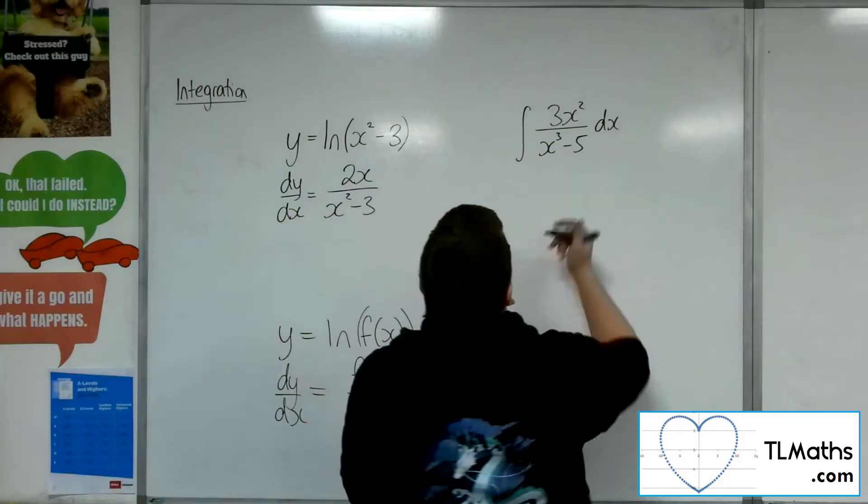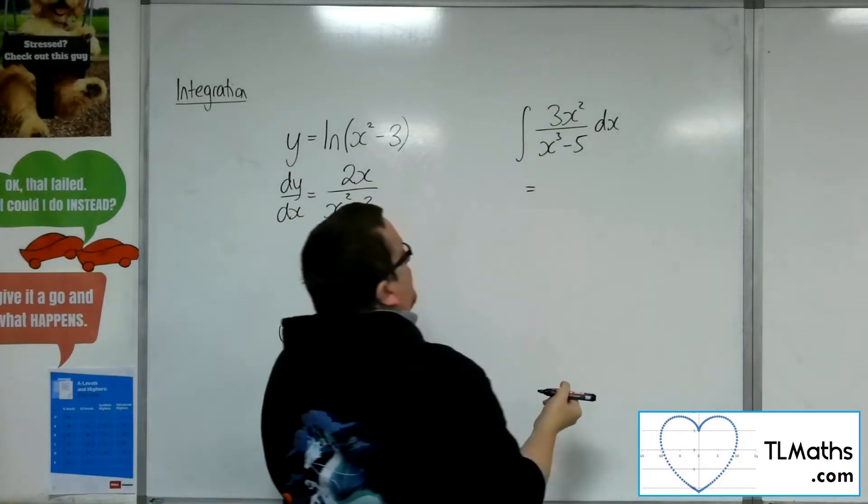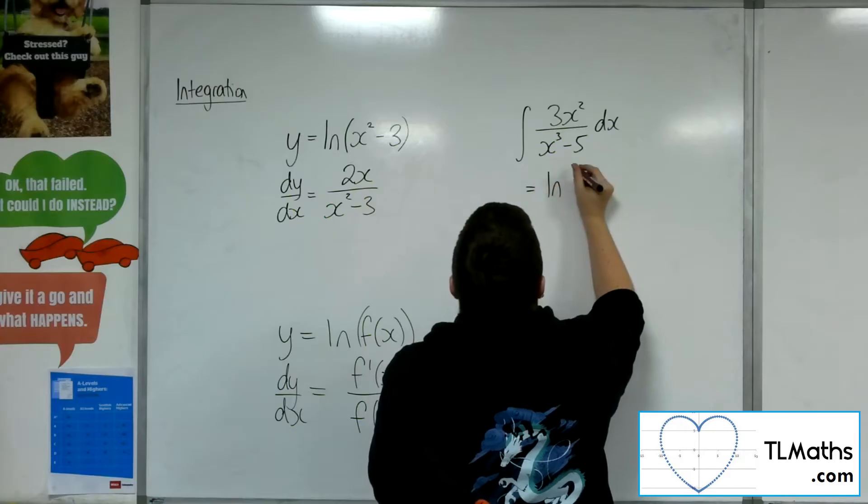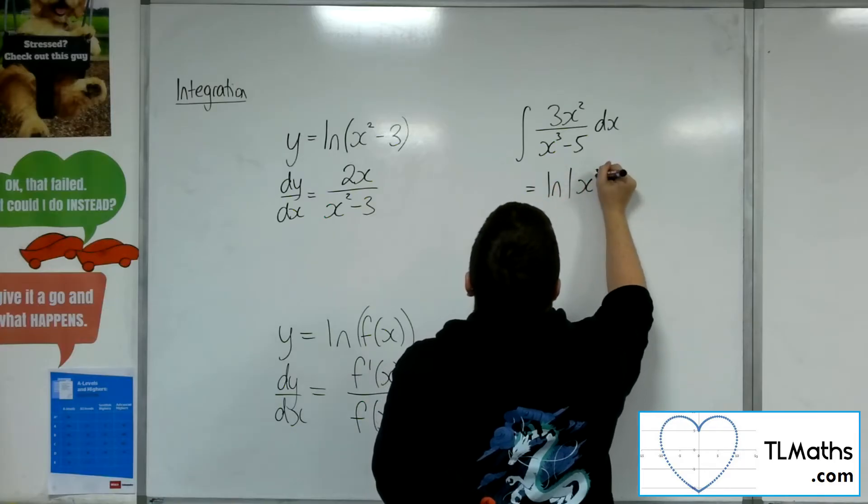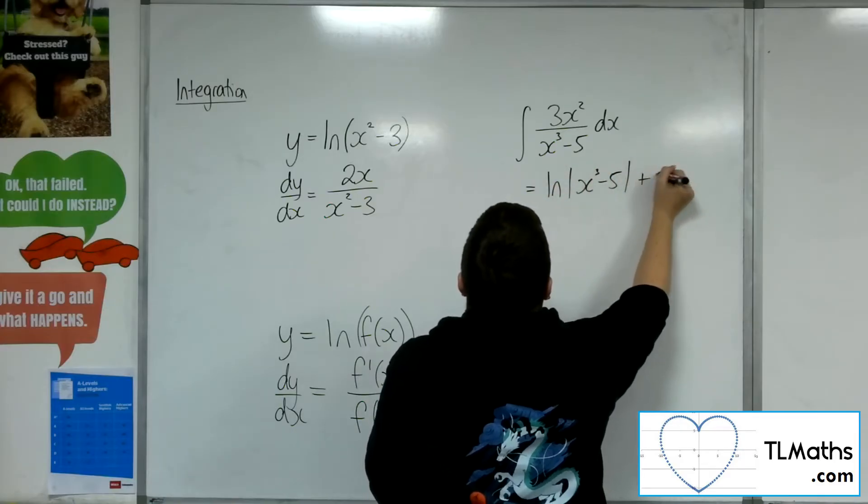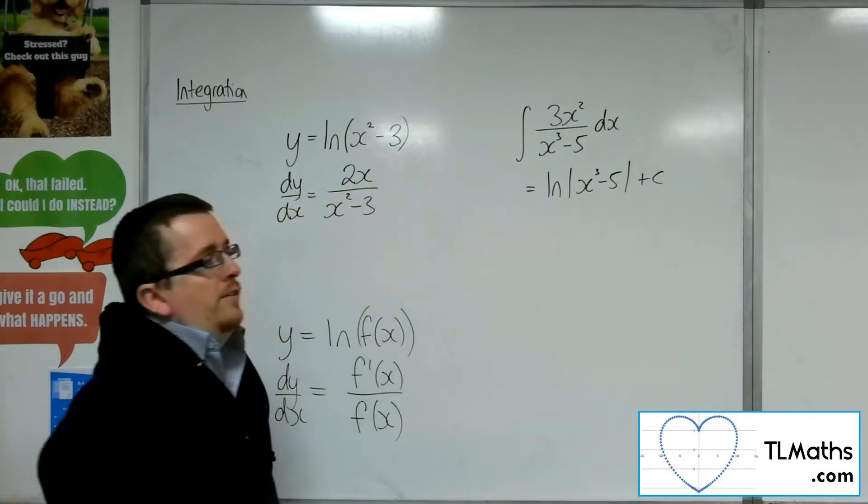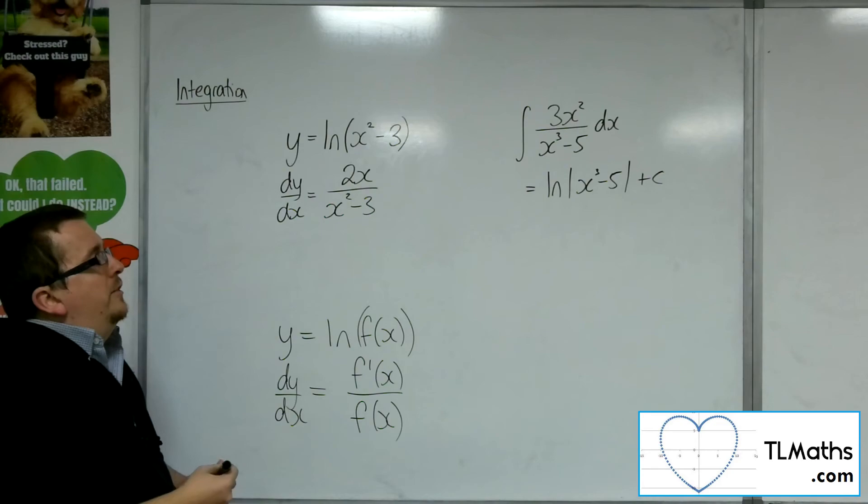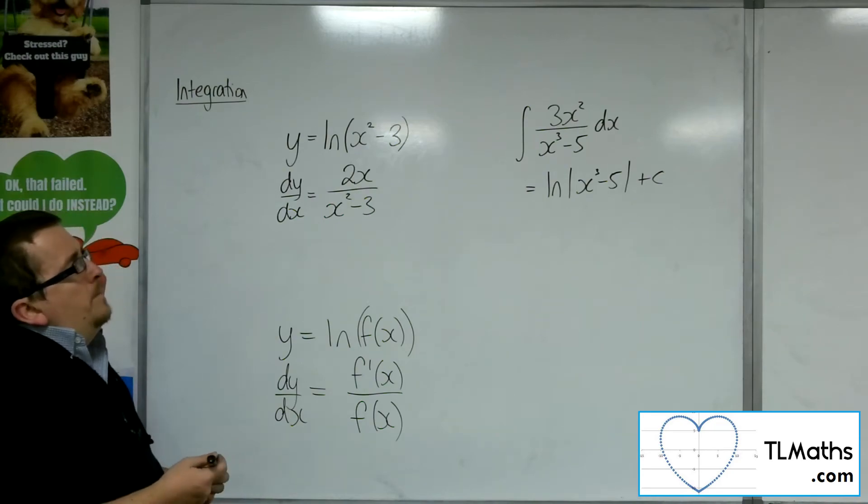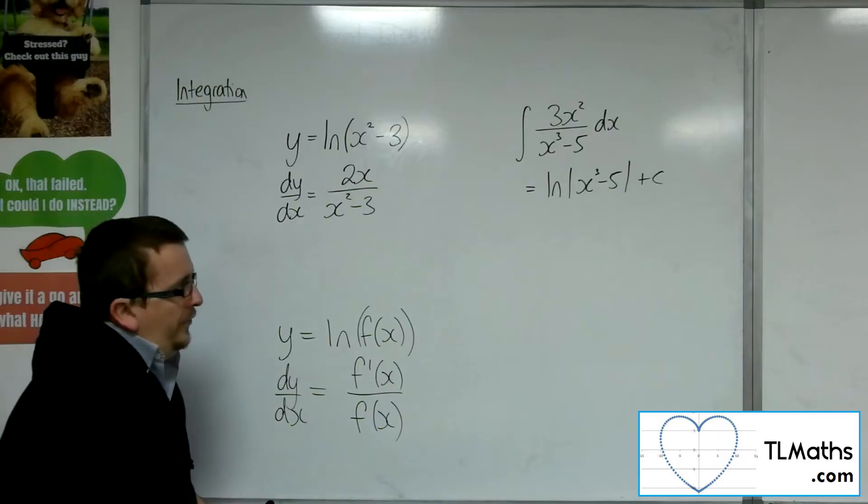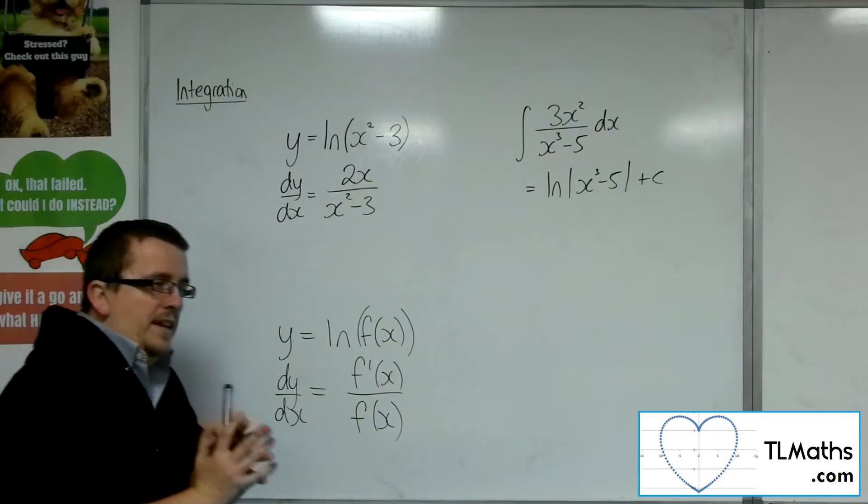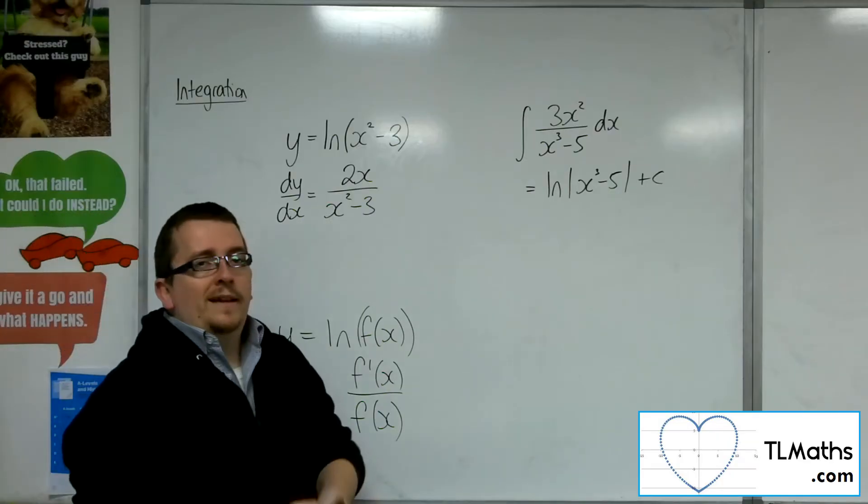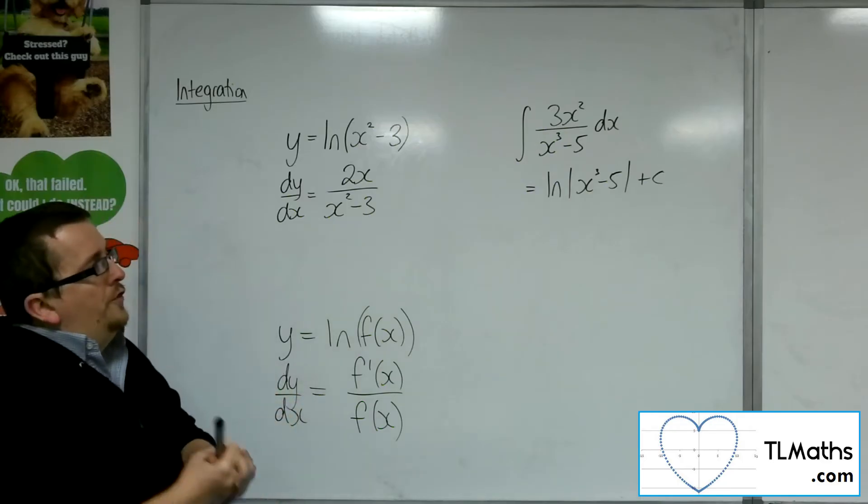So I know that this will integrate directly to log, really we should put it in a modulus here, of x cubed minus 5 because it forces that number, whatever it would be, to be positive. That's really the concept here. You're looking to see if the numerator is the derivative of the denominator.